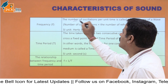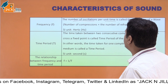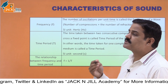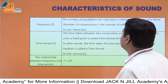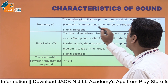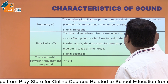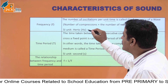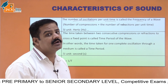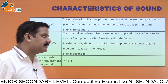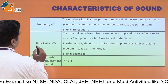Now, what is frequency? The number of oscillations per unit time is called the frequency of a wave. The number of compressions plus the number of rarefactions per unit time — that is the frequency of the wave. Its unit is hertz. Frequency is always measured in hertz.